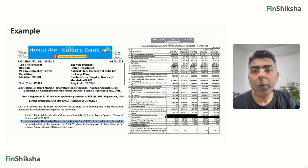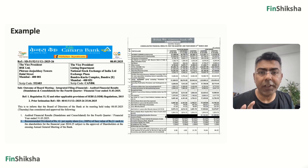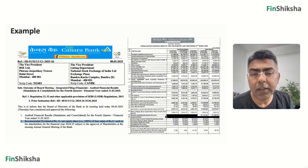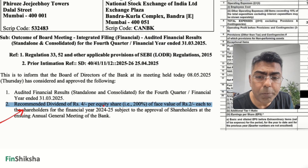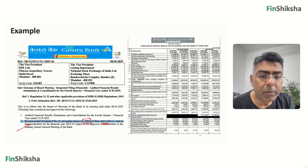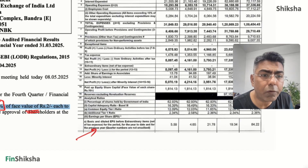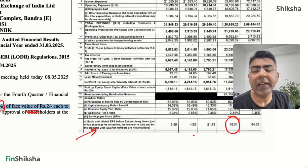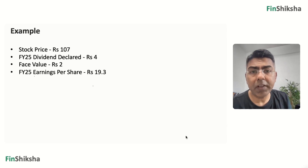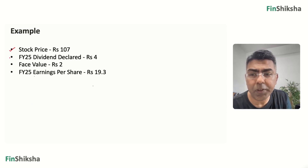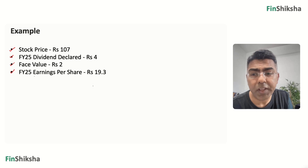We'll take the example of Canara Bank. What you see on the screen is the excerpt of the earnings release of Canara Bank. The company says they have recommended a dividend of 4 rupees per share, that is 200 percent of the face value of 2 rupees. We also note the basic and diluted EPS for the year 2025, which is 19.34. The stock price is around 107 in this example. The dividend declared is 4 rupees, the face value of the stock is 2 rupees, and the earnings per share is 19.3 for the last year.